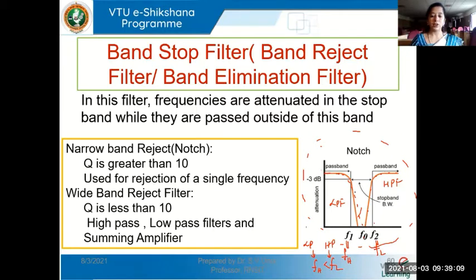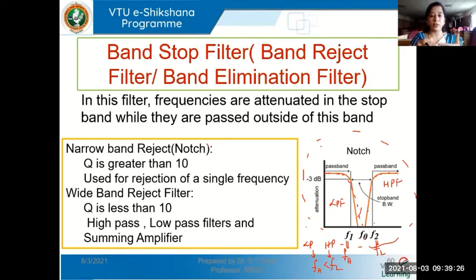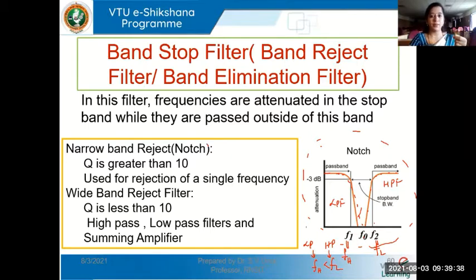The two pass bands are as shown and the stop band is also shown in this figure. There are two types: a wide band reject filter and a narrow band reject filter. If the bandwidth of the rejected set of frequencies is large, then it is a wide band reject filter. If the bandwidth is very small or it can be a single frequency, then we call it a narrow band reject or notch filter.